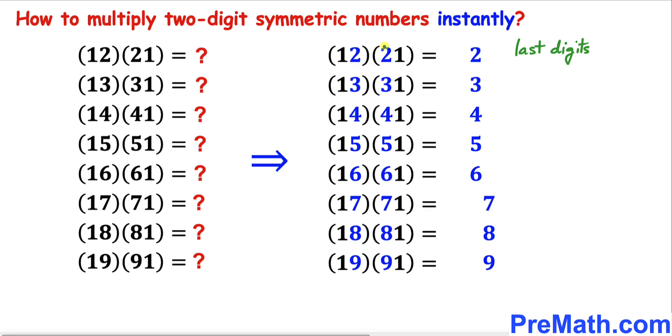Now we can see that this middle number corresponds to this last digit. Likewise, this middle number is the same as this last digit, and all the way to this 9, same as this last digit 9. Now let's look at the rest of the number.